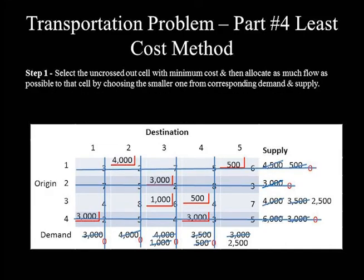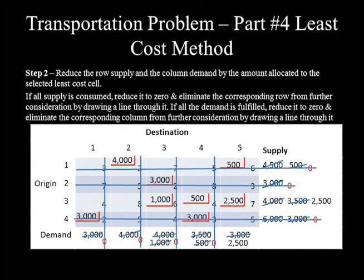The only remaining undeleted cell is Origin 3 to Destination 5. Supply corresponding to this cell equals demand, which is 2,500. This cell is called a balancing cell. Allocating 2,500 reduces both demand and supply to 0. At this stage, all demand and supply are reduced to 0.